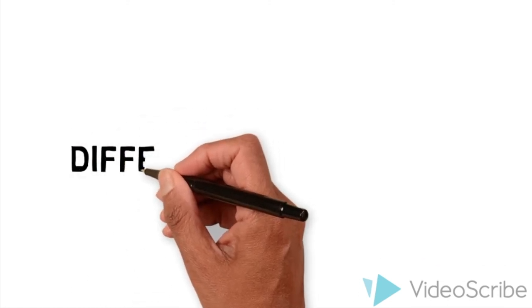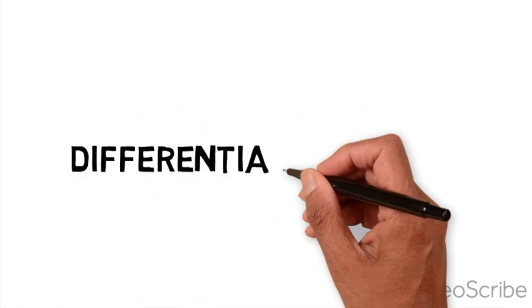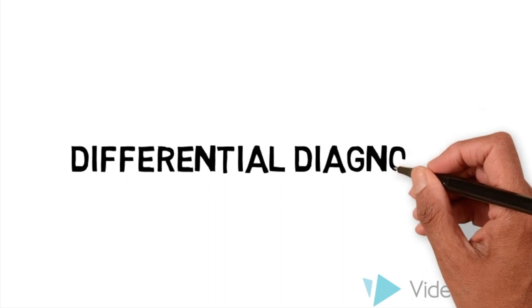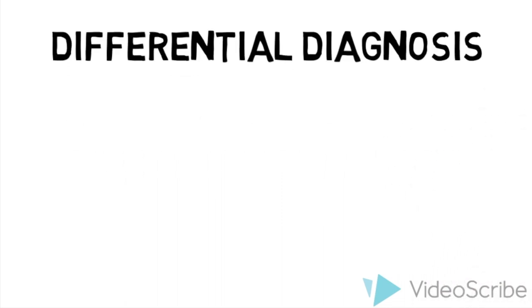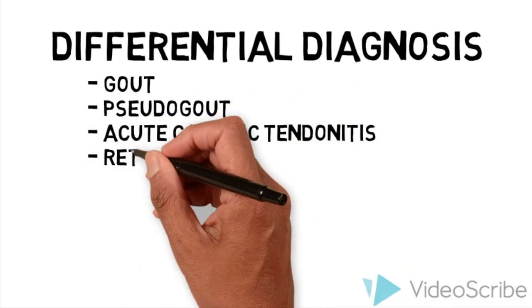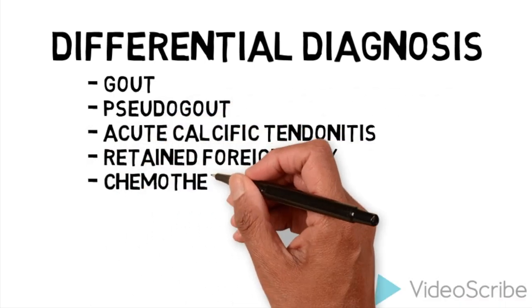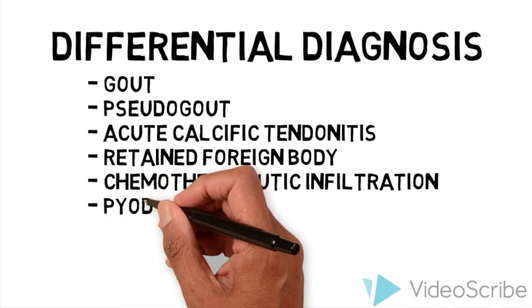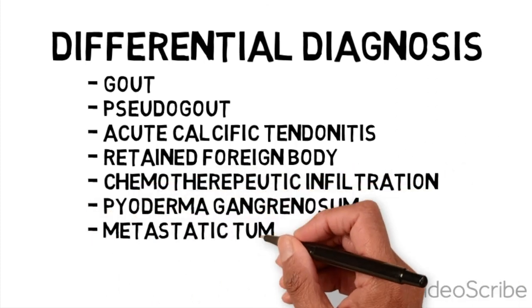While hand infections are common, it is important to acknowledge that there are other conditions that might present in a similar manner and which need to be excluded. These include gout, pseudogout, acute calcific tendonitis, a retained foreign body, a reaction to chemotherapeutic infusion, pyoderma gangrenosum, or a metastatic tumor.